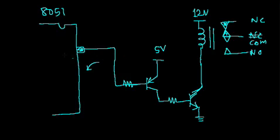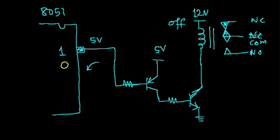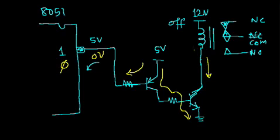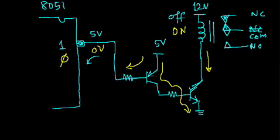If this pin is logic 1, then since the base is also at 5V, there will not be any current through the base. If the base current is not there, the collector current will not be there, so the relay will be off. If we make this pin 0, then there will be 0V, current will flow through the base, and because of this current there will be collector current, and the relay will turn on. So it is possible to make the relay on and off by setting or clearing any pin.